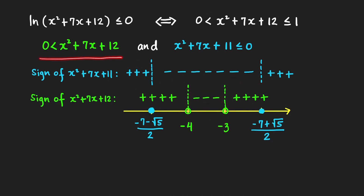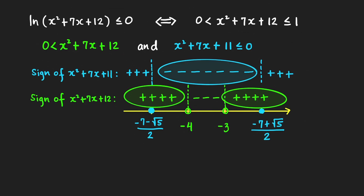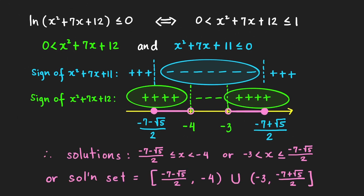For the first inequality, the expression must be greater than zero, so we choose the positive regions. For the second inequality, the expression must be less than or equal to zero, so we choose the region between the zeros, including both endpoints. The solution to the original inequality is then the intersection of these two solution sets.